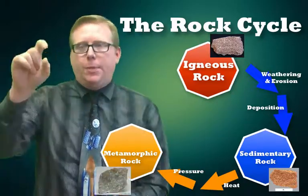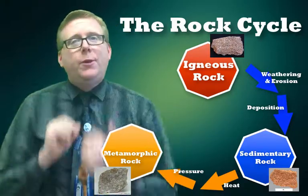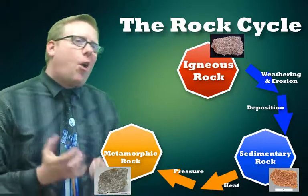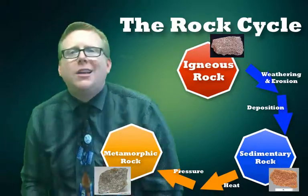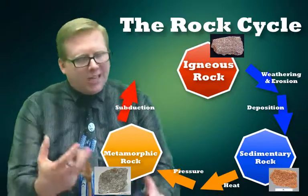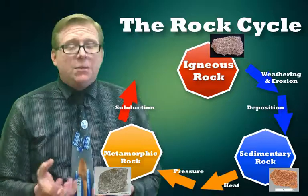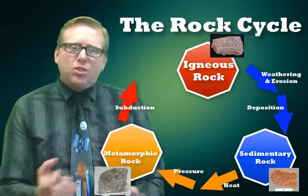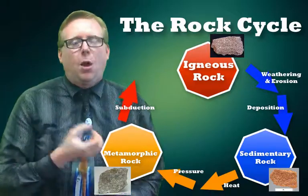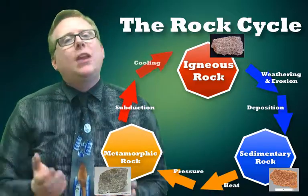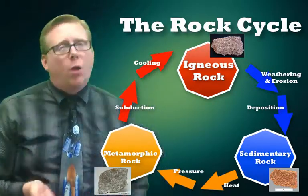We've gone from igneous to sedimentary to metamorphic. Those continents don't just stop moving when they collide, and eventually all rocks on the surface are subducted. Subduction pulls rock deep into the earth where it's very warm, and that heat begins to melt the rocks. In melting, it forces the magma up into a volcano, where it will cool and form a brand new igneous rock — and the whole cycle starts over again. The earth has recycled rocks.